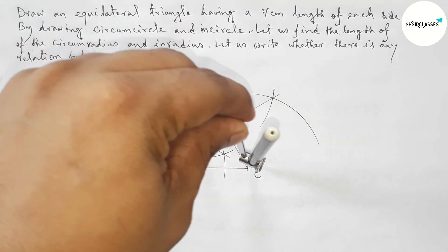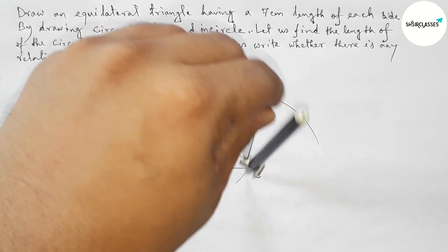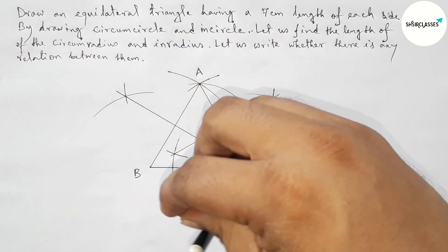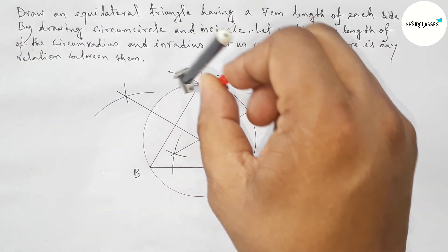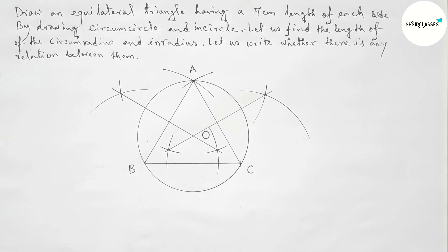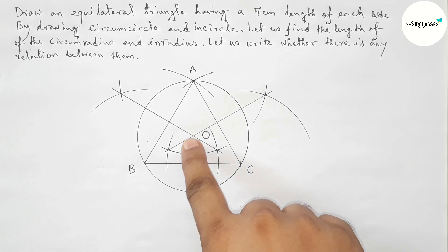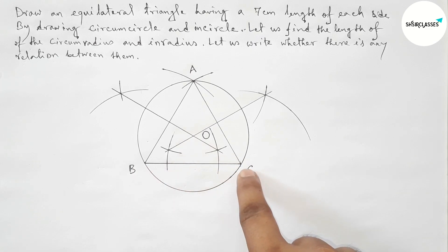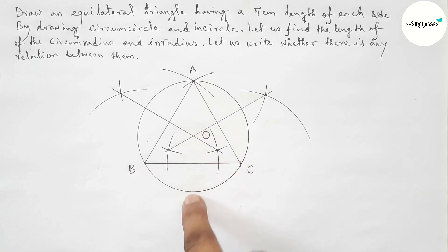Taking the length from O to B, O to A, and O to C. Now drawing a circle with radius OB — this is our required circumcircle.